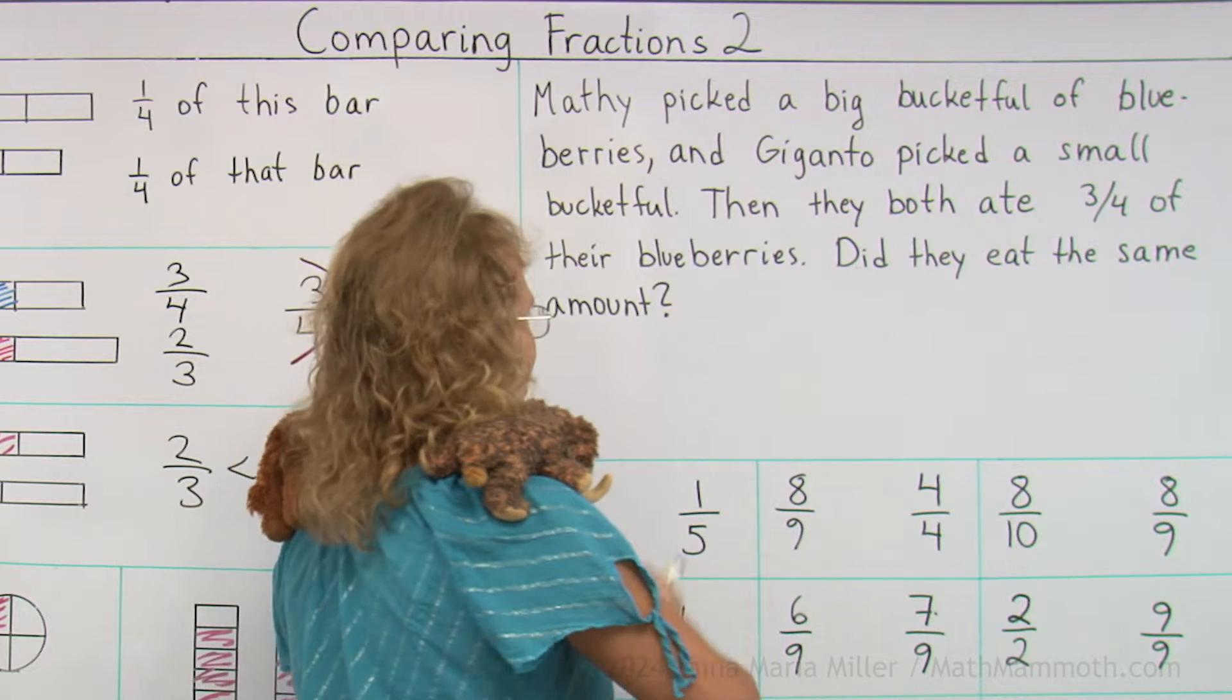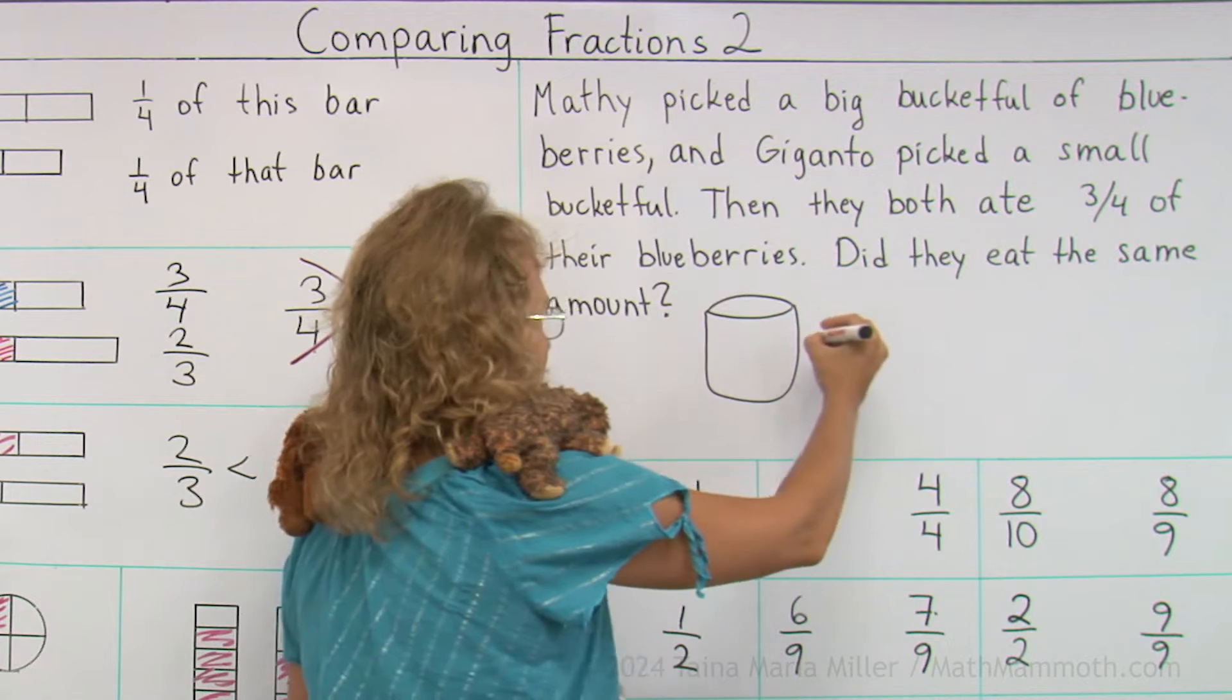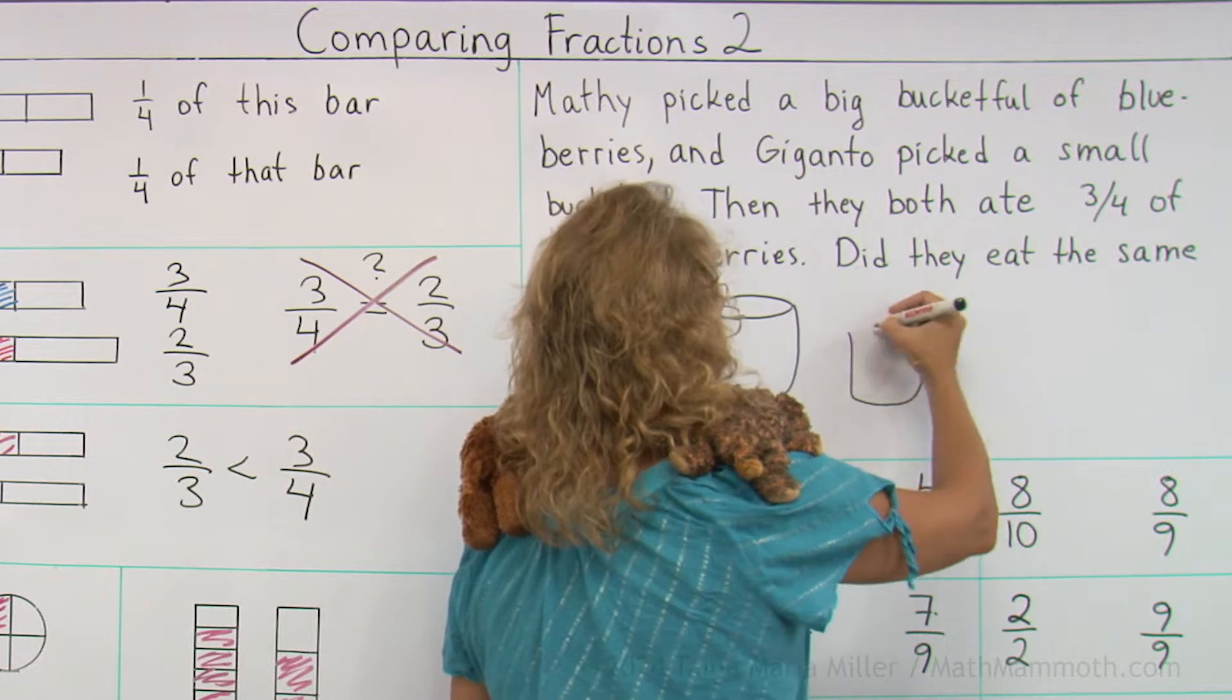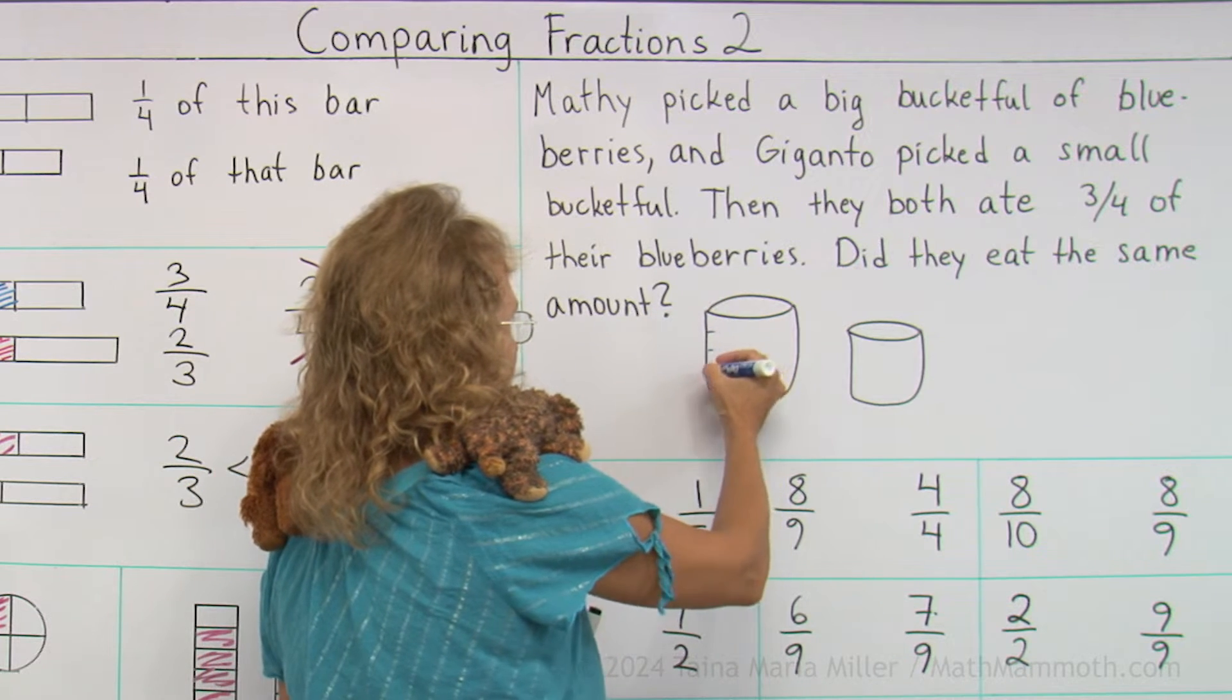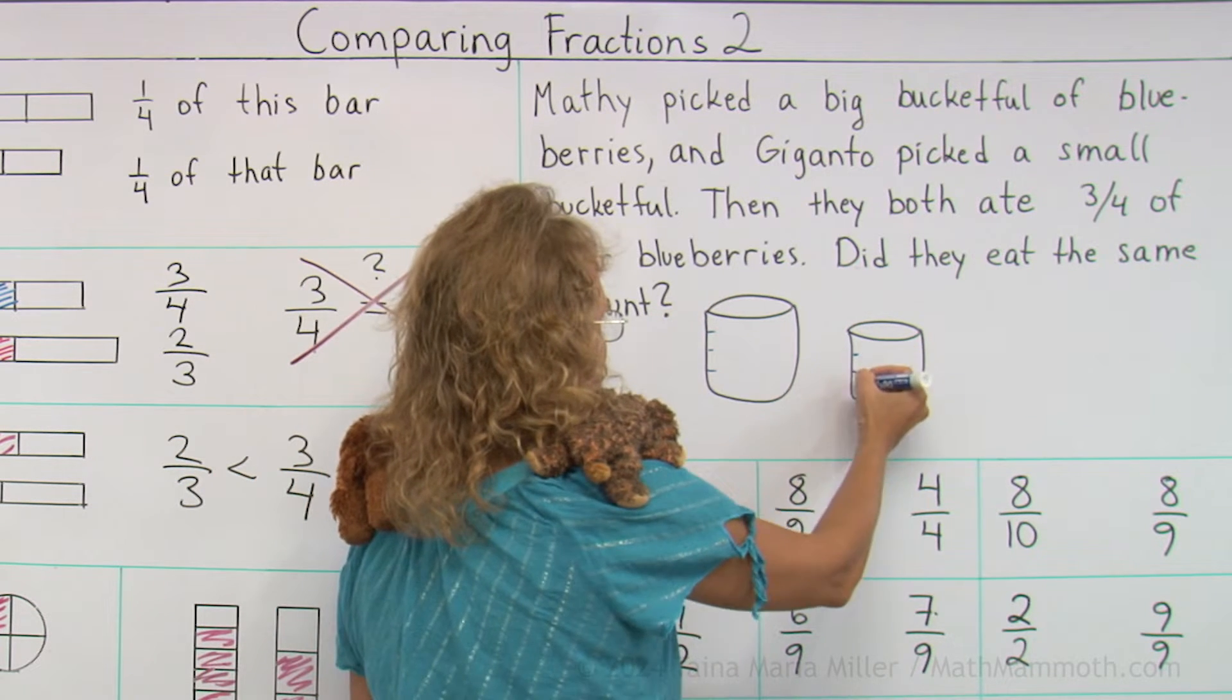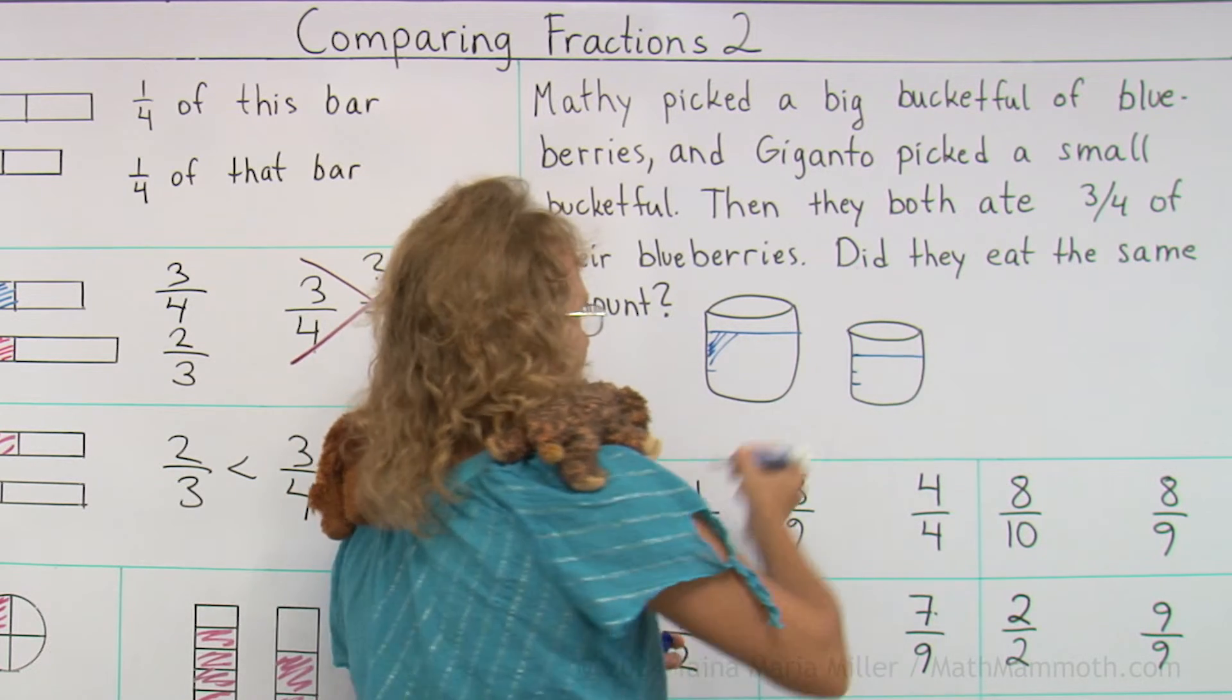We can see it if we draw a picture. Let's draw a picture of two bucket fulls. If there's a big bucket full, and then a small bucket full, and if it was divided into four parts, okay? And you eat up to that, up to that much.